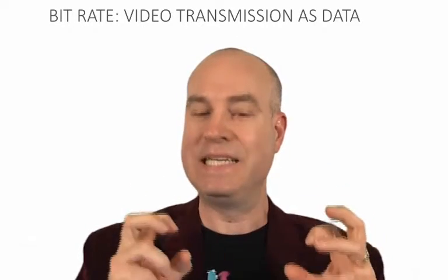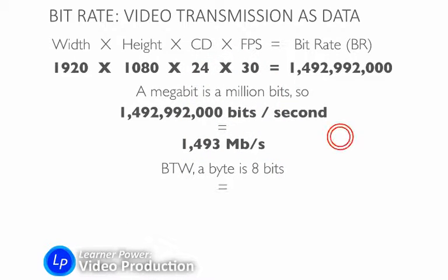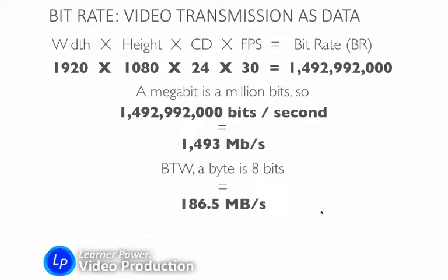Now it's important to note: bits are individual pieces of data that a computer stores, but bytes are something different. There are eight bits in one byte. You don't have to worry about that part of the formula — I'm not going to test you on it — but if you want to geek out, a byte is eight bits, and therefore we're talking about 186.5 megabytes per second. Megabits are abbreviated as capital M, lowercase b — so that's 1,493 Mb/s, which equals 186.5 megabytes per second. That is how much storage space we're going to need on our hard drive for one second of that HD video — if it's uncompressed.